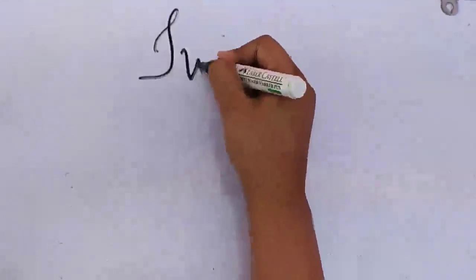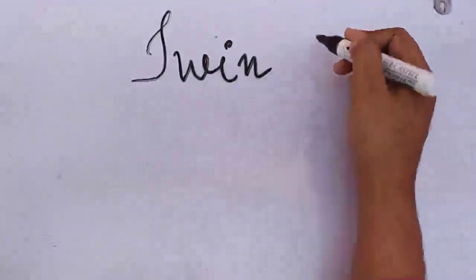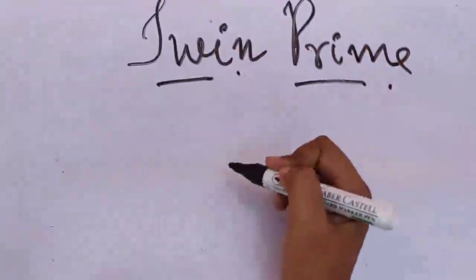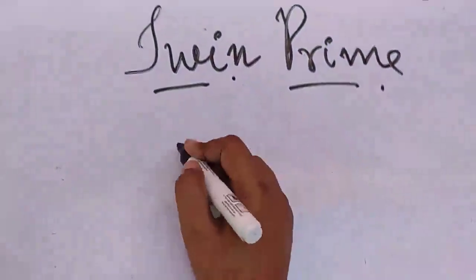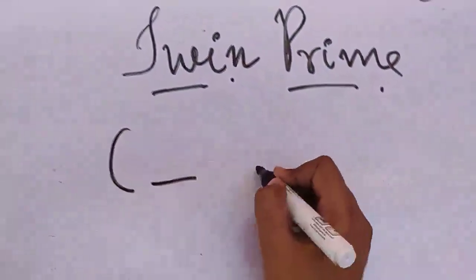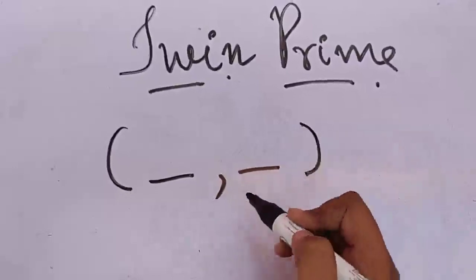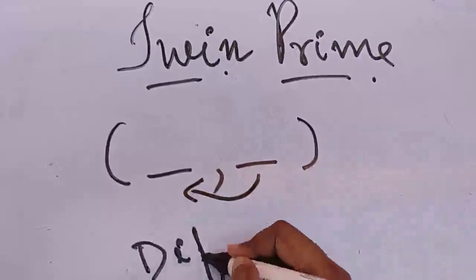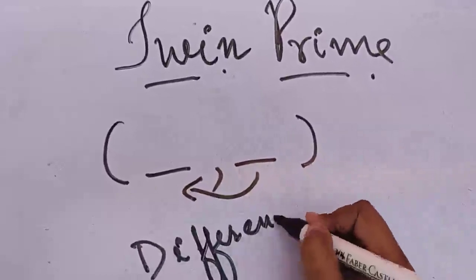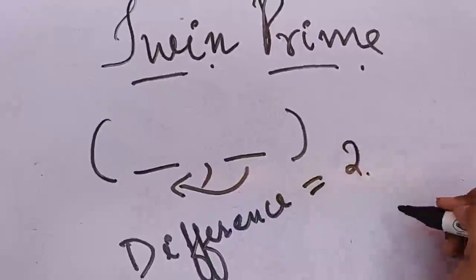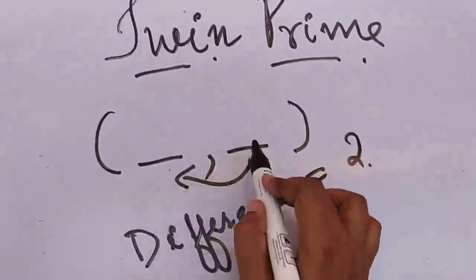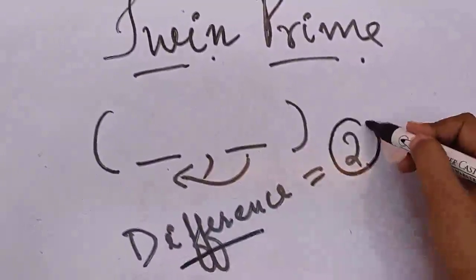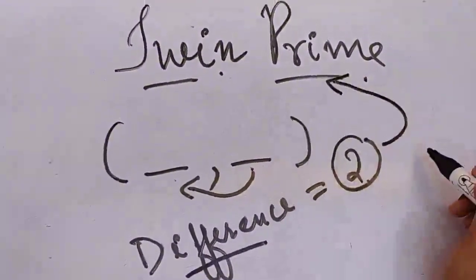That topic is twin prime. Very easy. You just need to be clear about what twin primes are, then you can find them yourself. What are twin primes? Two such prime numbers whose difference, that is if I subtract these two, what is it called? Difference. What should it be? 2. If you write two prime numbers such that when you subtract them, when you find the difference, the answer is 2, then we call them twin primes.